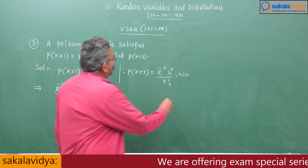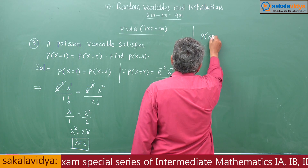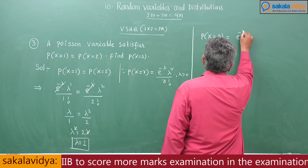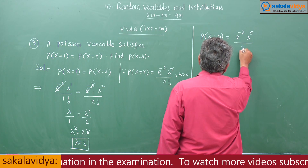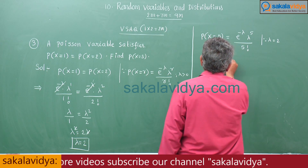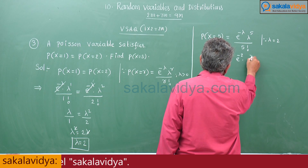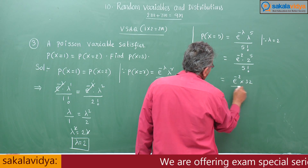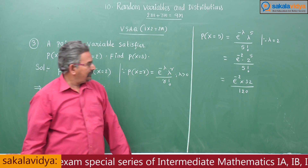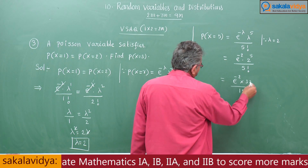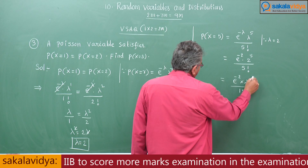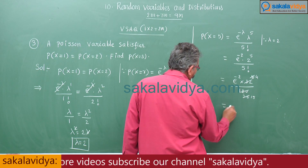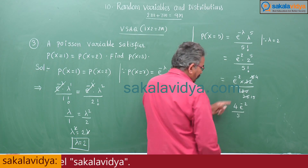Now we have to find P(X=5). P(X=5) equals e to the power minus lambda times lambda to the power 5 divided by 5 factorial. Substituting lambda equal to 2: e to the power minus 2 times 2 to the power 5 divided by 5 factorial. Now 2 to the power 5 is 32, and 5 factorial is 120. Simplifying, this gives 32 divided by 120 times e to the power minus 2, which equals 4 divided by 15 times e to the power minus 2, and e to the power minus 2 can be written as 1 by e squared.